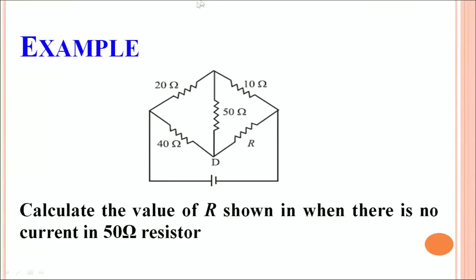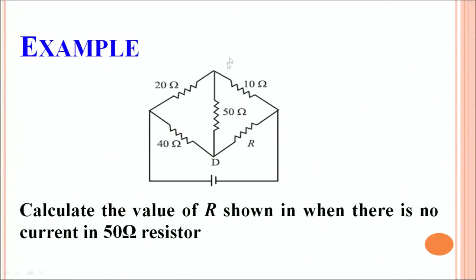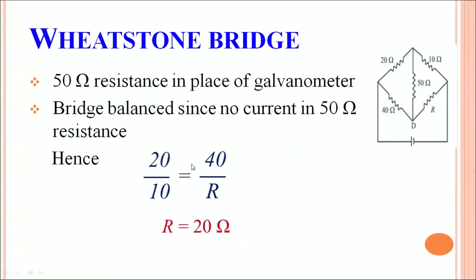Let us study an example applying the concept of Wheatstone bridge to find an unknown resistor. In this circuit, 4 resistors are given and R is the unknown resistor. Instead of a galvanometer, a 50 ohm resistor is connected, with a battery causing current flow. We need to calculate the value of R when there is no current in the 50 ohm resistor. No current means the bridge is balanced, so the 50 ohm resistor is irrelevant. Applying the balance condition: 20/10 = 40/R, which gives R = 20 ohms.